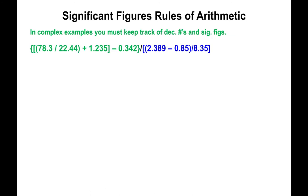Now I'll show how to track significant figures in a more complex example involving multiple operations. The key idea is that you do not round up or round down until you reach the final answer — but you do keep track of how many sig figs or decimal places you're dealing with at each step. Start from the innermost portion: inside the parentheses, you have 78.3 (three sig figs) divided by 22.44 (four sig figs), so the answer must have three significant figures.